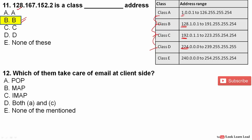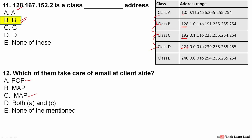Which protocols take care of email at the client side? The answer is POP3 (Post Office Protocol) and IMAP (Internet Mail Access Protocol) — these two are used for email at the client side. For the server side, SMTP is used. So POP and IMAP are for the client side, SMTP is for the server side.